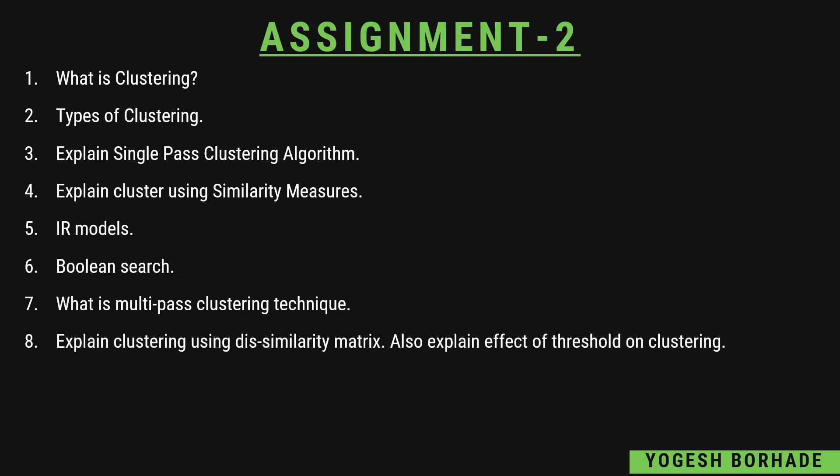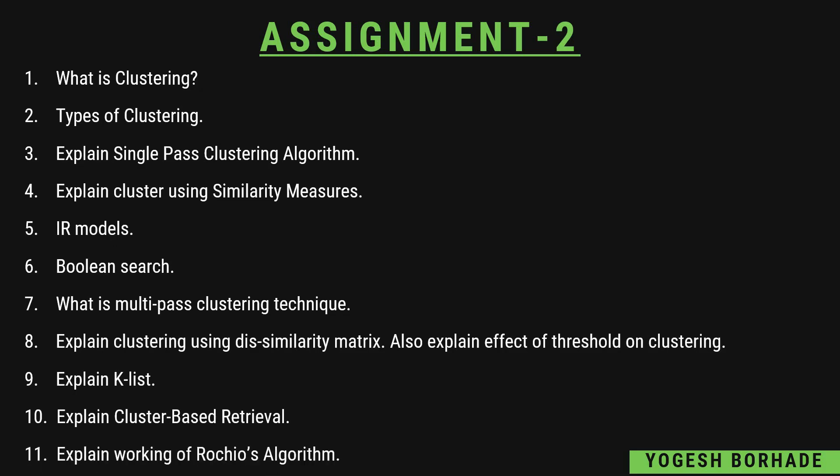Prepare how clustering is explained using the similarity matrix and how this similarity matrix is used in clustering. Also prepare what is the effect of threshold on clustering — what is meant by threshold and what are the types of clustering — and what k-list means. Explain clustering-based retrieval, since in clustering we have different types of retrieval. The last question for this assignment is the working of Rocchio's algorithm, but there are less chances of this since you haven't used it in practicals — just have an idea of the algorithm and its steps. This is about assignment number two.